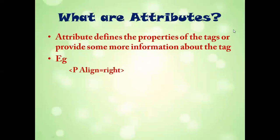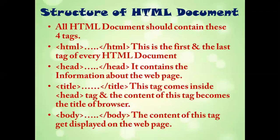Now, what are attributes? Attributes are the properties of a tag. For example, if I'm talking about a car, its properties include how many wheels it has, its color, and its brand. Similarly, for tags in HTML, the properties might be the alignment of the content — whether a paragraph's content is on the left, right, center, top, or bottom. So 'align' is an attribute of the paragraph tag because it gives extra information about that tag.